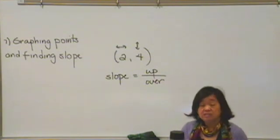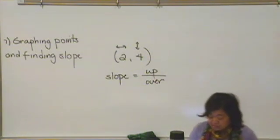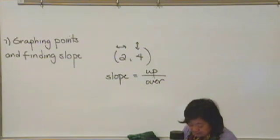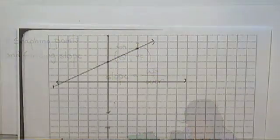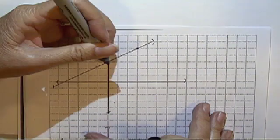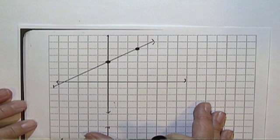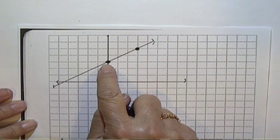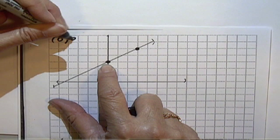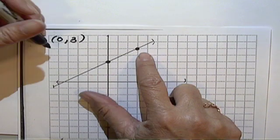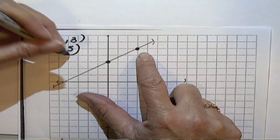In algebra classes or geometry classes, you may have heard this expressed as rise over run. How far the line rises, how far it runs. But basically, how far it goes up, and how far it goes over. So let's take a look at a couple of examples.